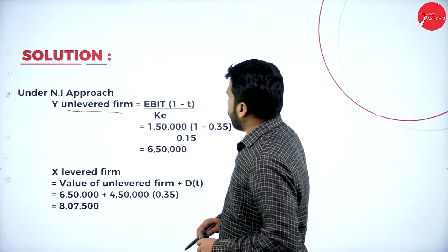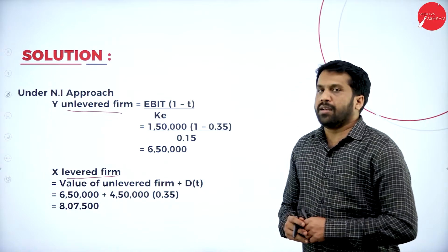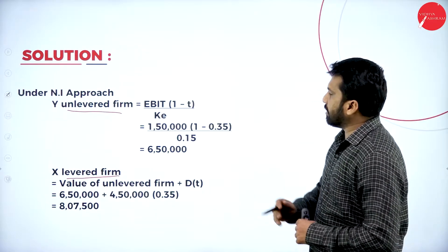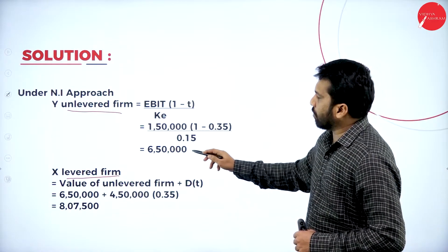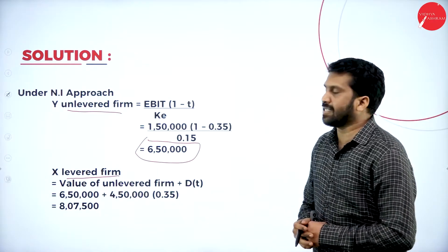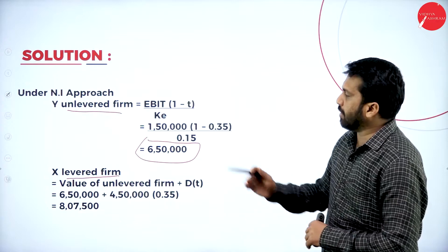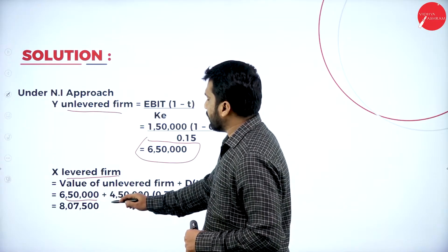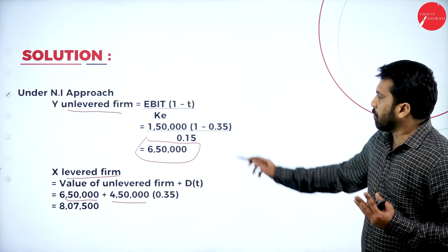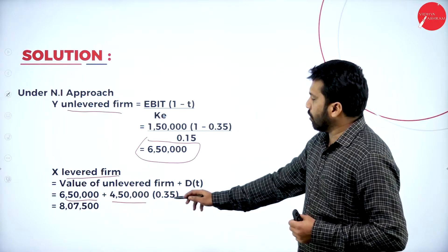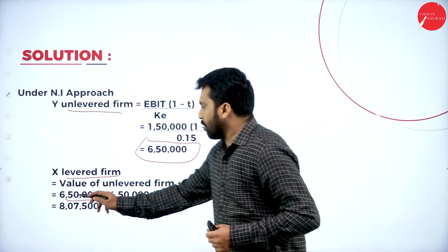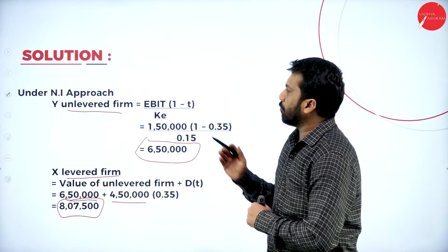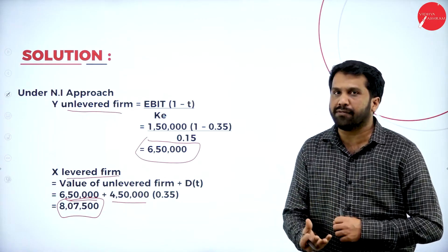Now for the NOI approach — the formula is EBIT × (1 − t) ÷ Cost of Equity. EBIT = 1,50,000; tax = 0.35; cost of equity = 15%. For Y (unlevered form): 1,50,000 × (1 − 0.35) ÷ 0.15 = 6,50,000. For X (levered form): unlevered value 6,50,000 plus tax shield on debenture 4,50,000 × 0.35 = 1,57,500, giving a total of 8,07,500.